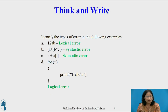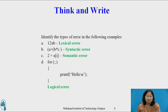I hope all of you have completed this activity. The question was: identify the types of error in the following examples. First, misspelling an identifier, keyword, or operator is a lexical error — hence '12ab' is a lexical error. Arithmetic expression with unbalanced parentheses is a syntactic error — hence option b is an example of a syntactic error. Operator applied to incompatible operands is a semantic error — hence '2 plus a' is a semantic error. Infinitely recursive call is a logical error — hence option d is a logical error.